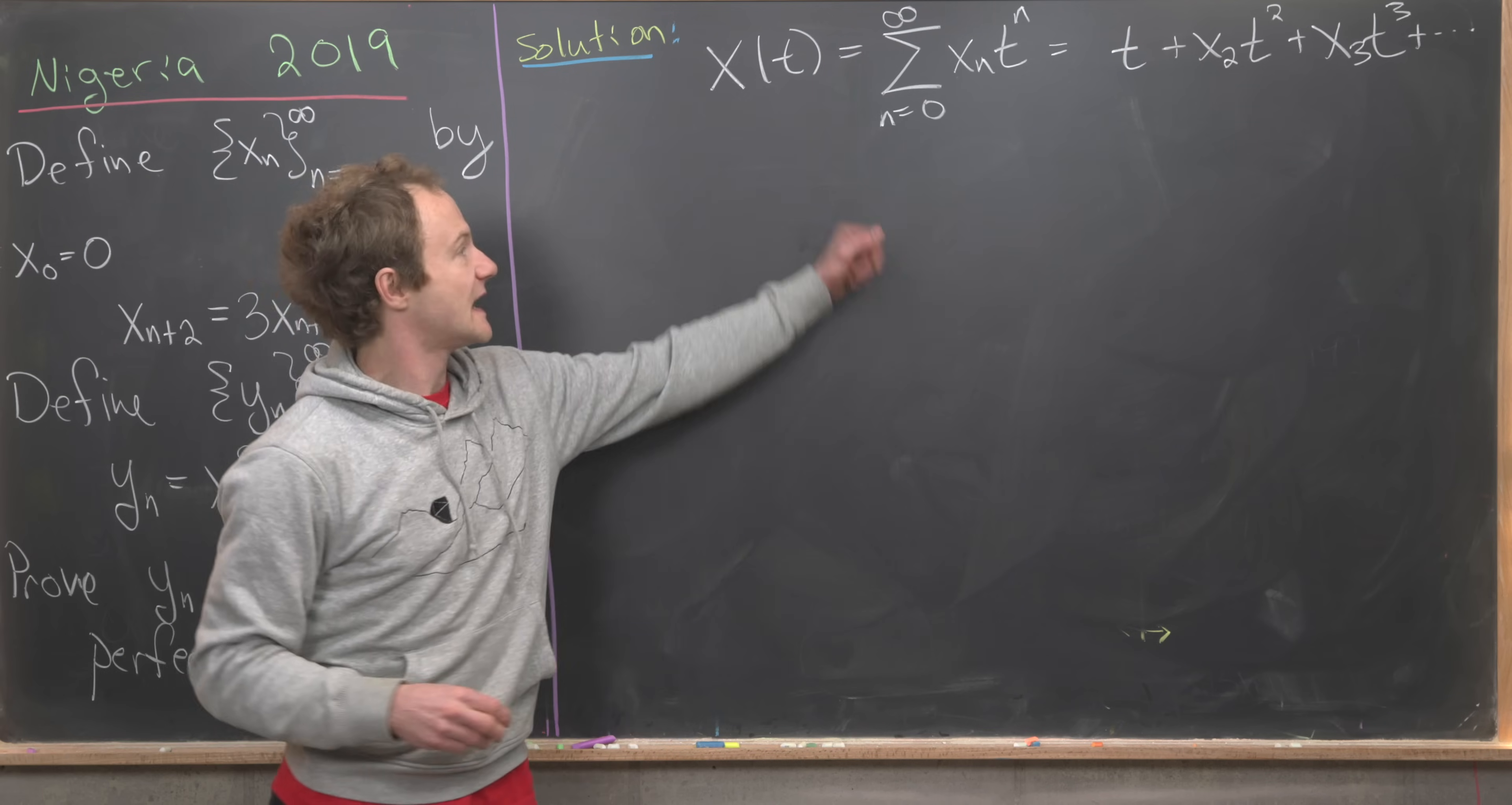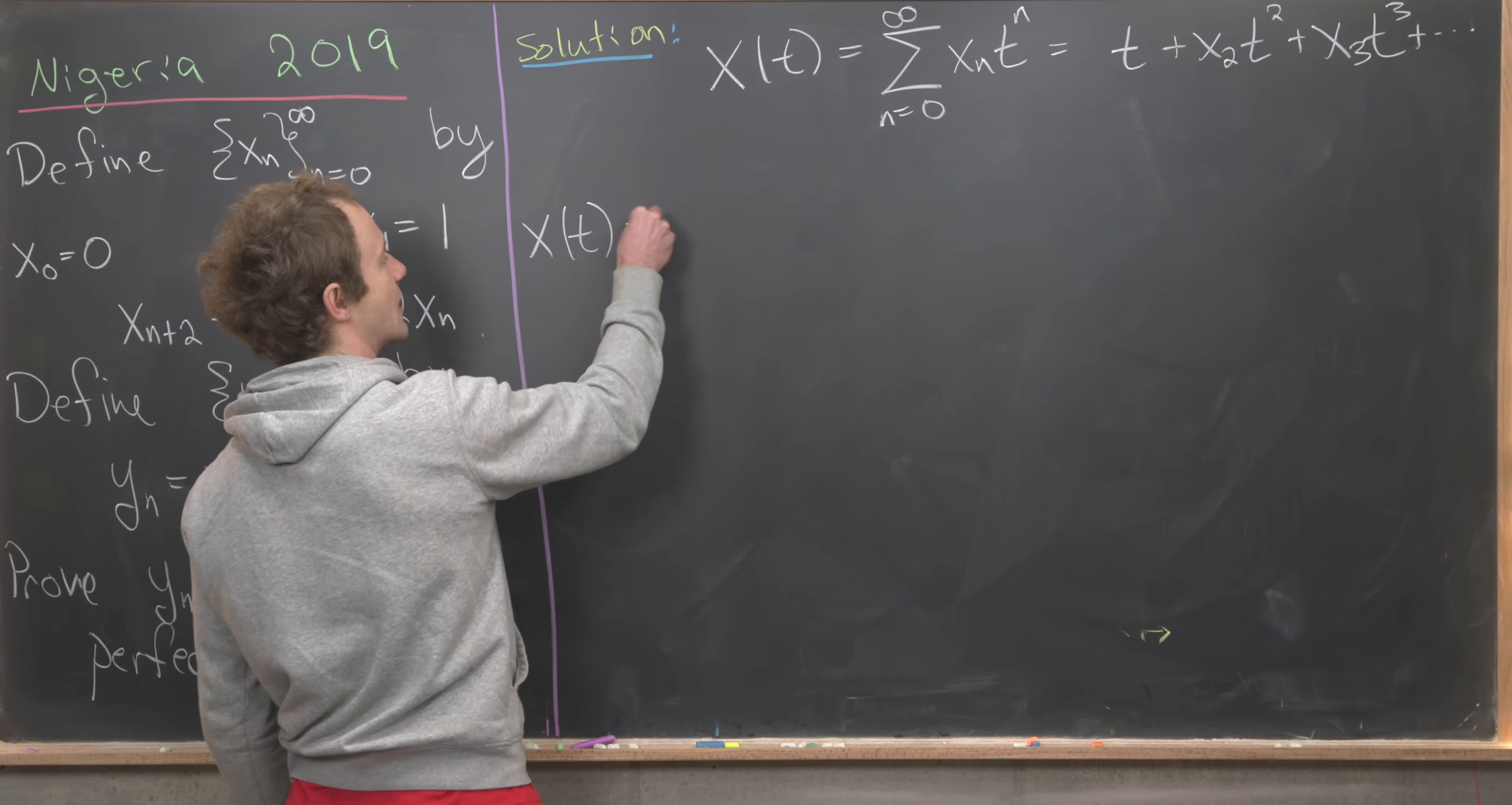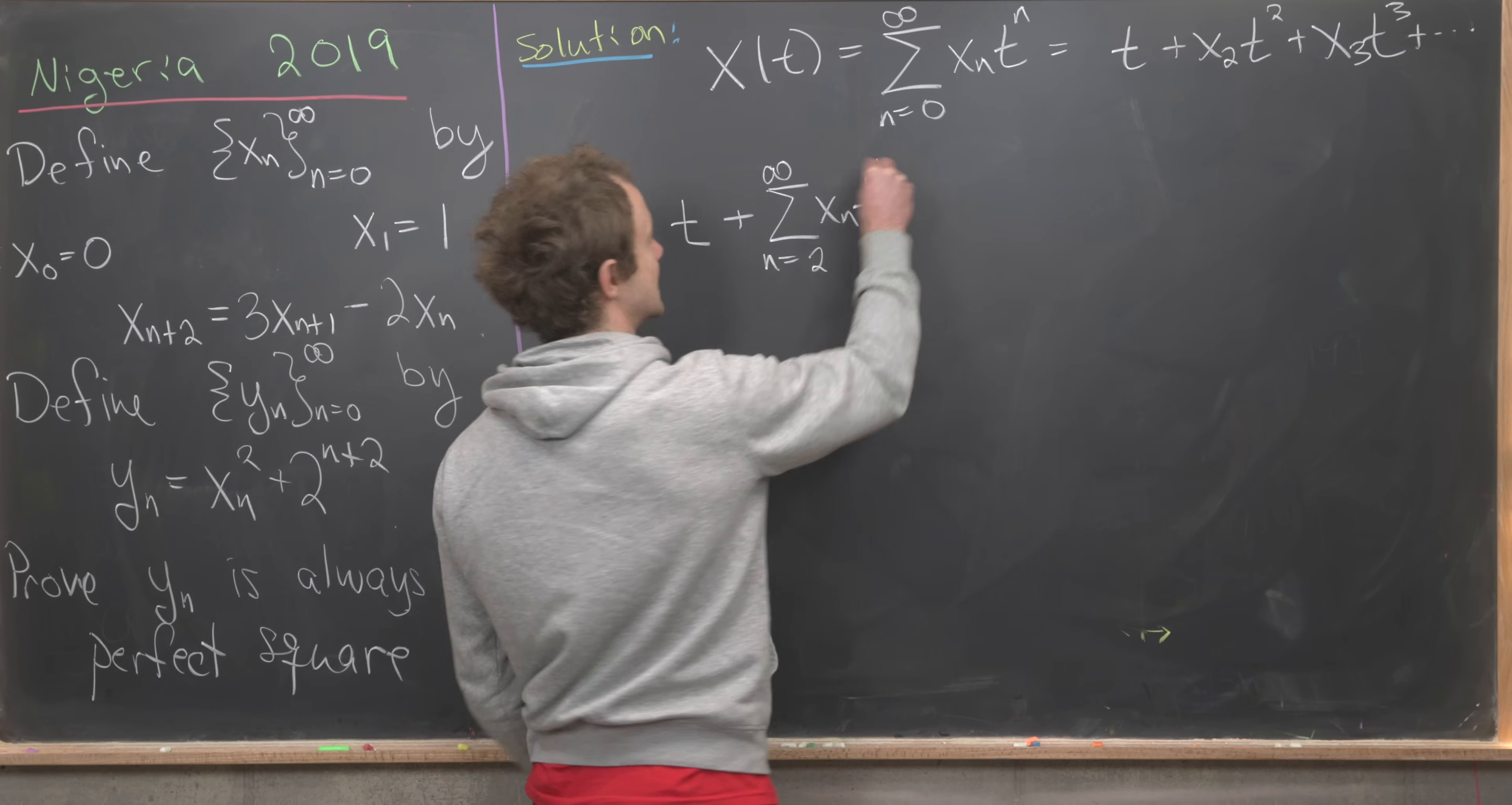Next up what we'll do is take out the first two terms from this sum and then we can apply this recursion. I'll just take my capital X of t down here, take out my first two terms so that would be 0 and t, leaving us with t plus this sum as n goes from 2 up to infinity of x sub n t to the n.